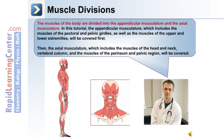This is the organization for this tutorial. The muscles of the body are divided into the appendicular musculature and the axial musculature. In this tutorial, the appendicular musculature — which includes the muscles of the pectoral and pelvic girdles, as well as the muscles of the upper and lower extremities — will be covered first. Then the axial musculature, which includes the muscles of the head and neck, the vertebral column, and the muscles of the perineum and pelvic region, will be covered.